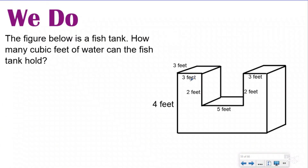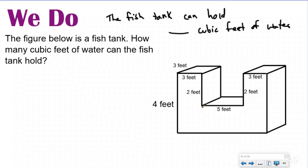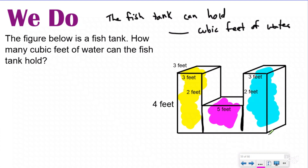Now let's try the 'we do.' Here we have a fish tank — how many cubic feet of water can the fish tank hold? This one is not split apart, so I'm going to split it apart vertically. I'm actually going to have three different prisms here — yellow, purple, and blue. So instead of finding the volume of two prisms, we're going to be finding the volume of three prisms.